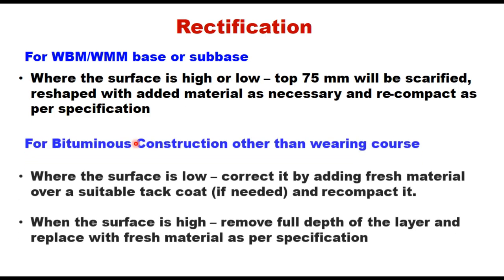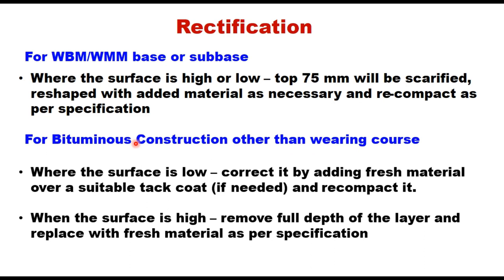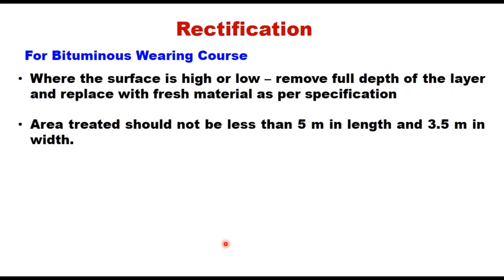In case of bituminous construction other than wearing course, where the surface is low, correct it by adding fresh material over a suitable tack coat if required and recompact. When the surface is high, remove the full depth of the layer and replace with fresh material as per specification. In case of bituminous wearing course, whether the surface is high or low, remove the full depth of the layer and replace with fresh material as per specification. The area treated should not be less than 5 meter in length and 3.5 meter in width, that is a single lane width.